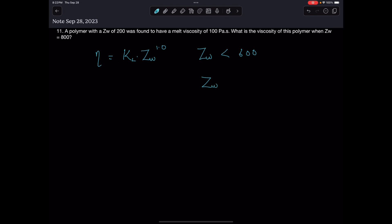For ZW values greater than 600, the relationship between viscosity and ZW is given by eta equals a constant KH times ZW to the power 3.4.